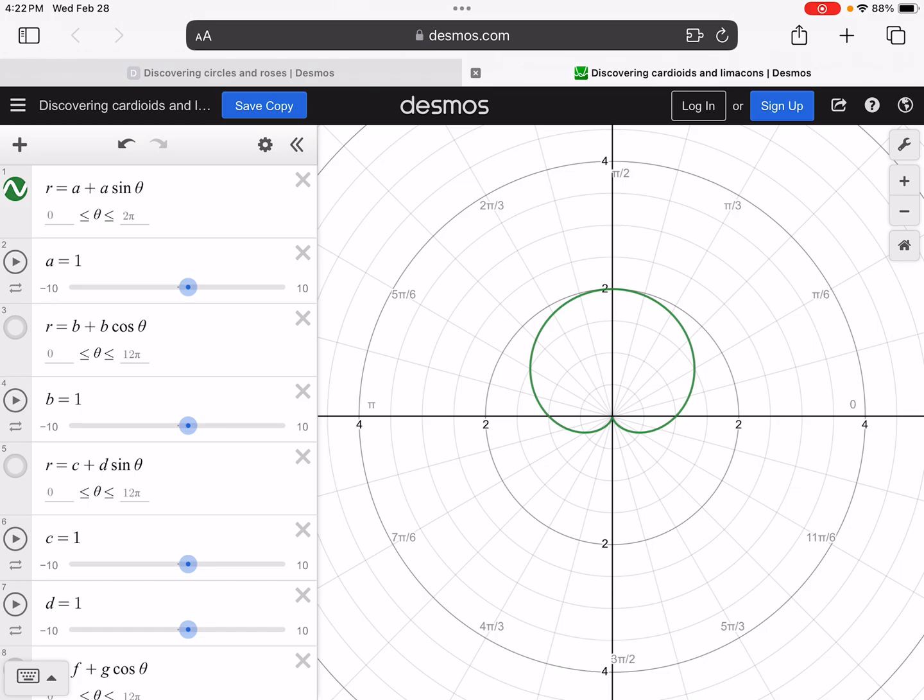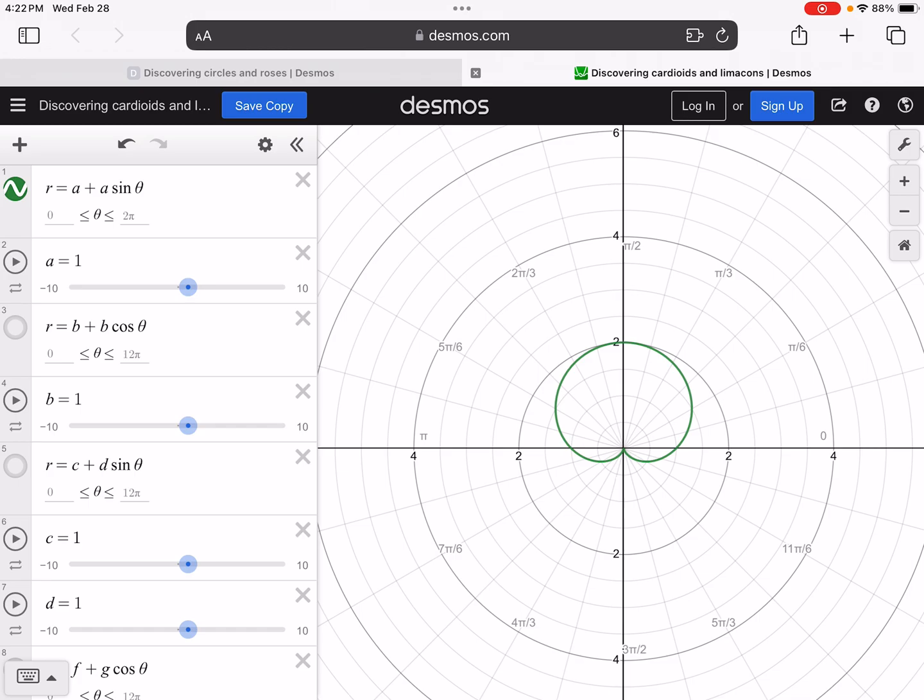Okay, so this very first one, I have this graph, when my, notice my a value is equal to 1. When those are the same, it opens... okay, so there's two different things that can happen. We can look at a, we can look at a plus a sine theta, or a plus a cosine theta, or b, whatever. Okay, as that number gets bigger, it's going to grow.